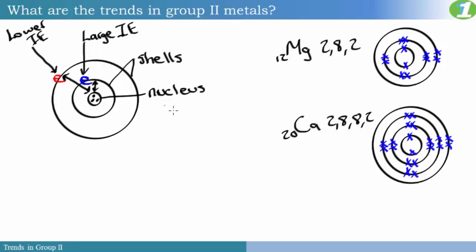Let's see how that links to group 2 elements. For example, magnesium and calcium. Magnesium has an atomic number of 12, which gives it a configuration of 2, 8, 2. Calcium's atomic number is 20, and its configuration is 2, 8, 8, 2. As you go down the group, you will notice that the number of shells increases. If the number of shells increases, the valence electron is going farther away from the nucleus. Magnesium's valence electrons are closer to the nucleus than the valence electrons in calcium. So the distance is shorter in magnesium than in calcium. The valence electrons on magnesium being closer to the nucleus are being held more tightly.